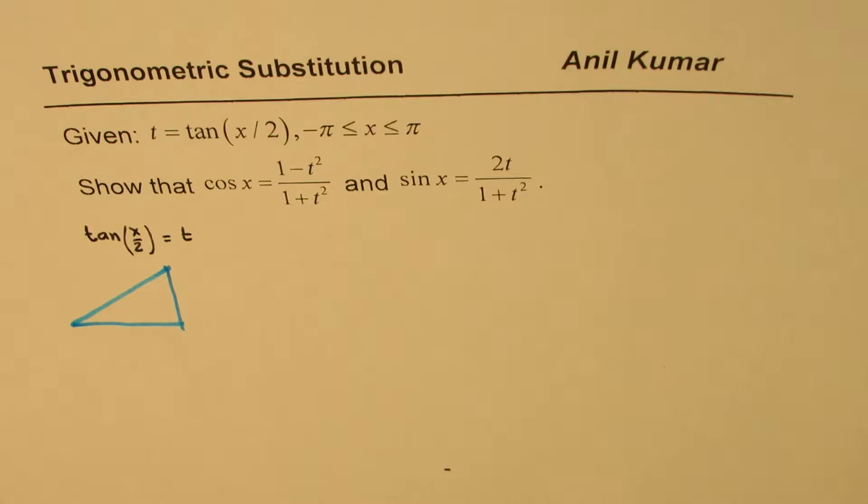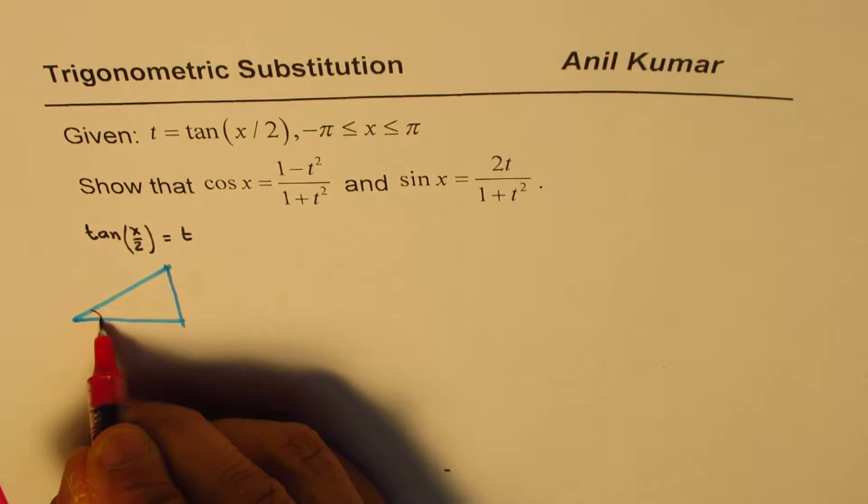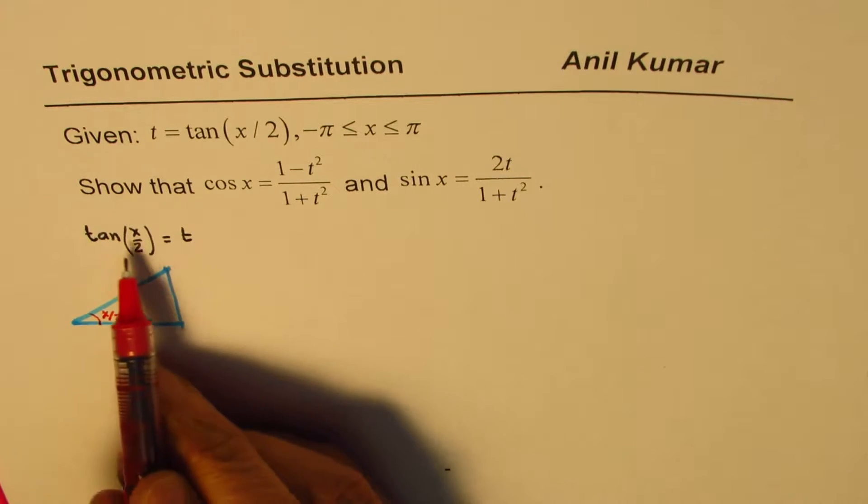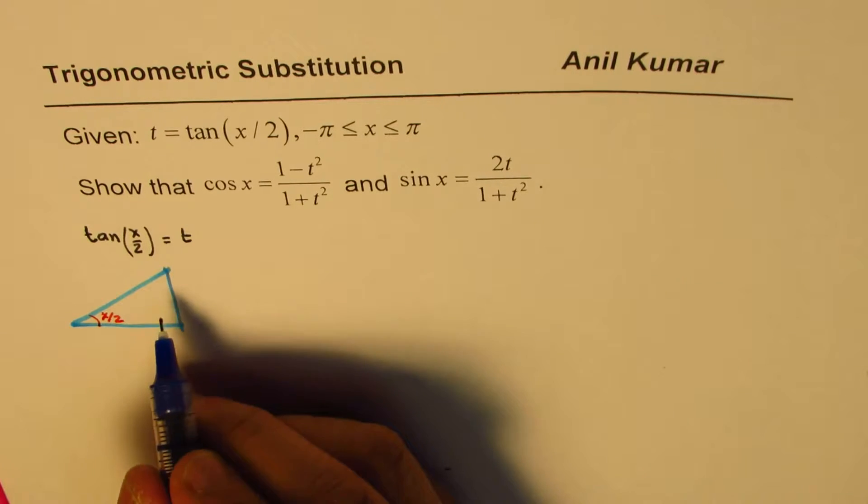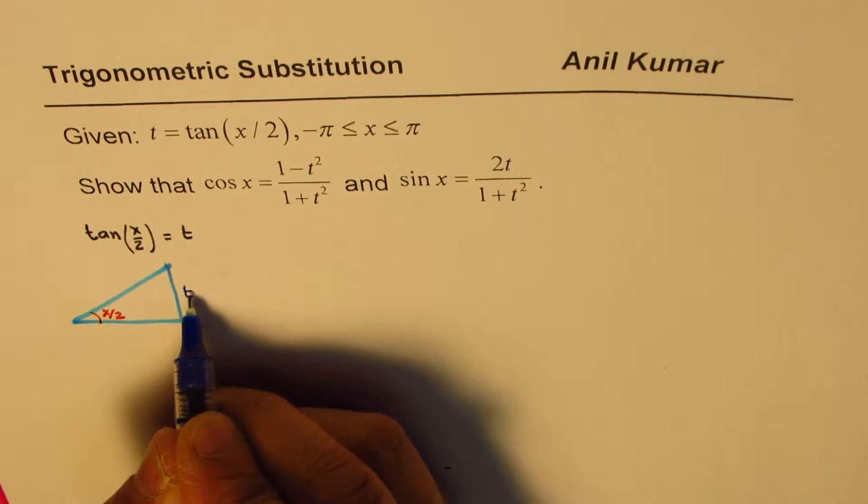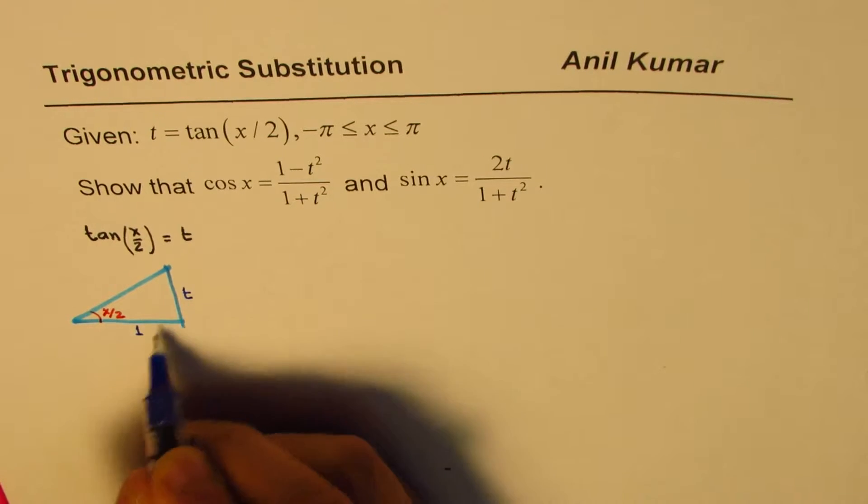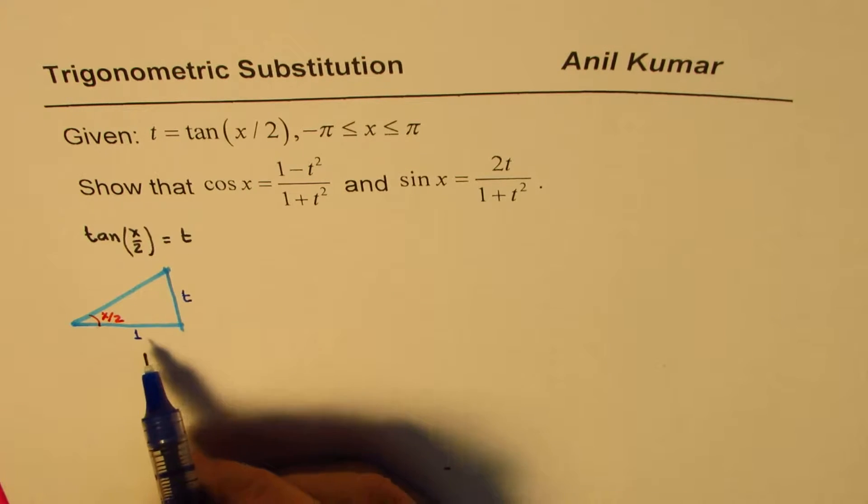And the angle is x/2. Let's say this angle here is x/2. And when we say tan(x/2) is t, it really means that the ratio of these two sides, opposite and adjacent, is t.